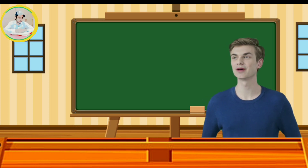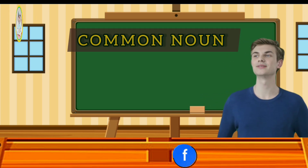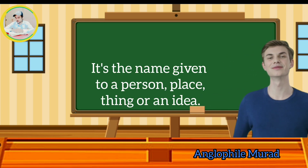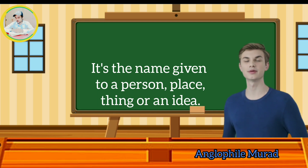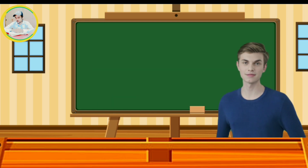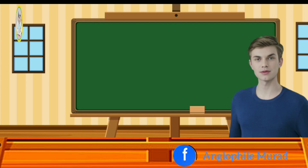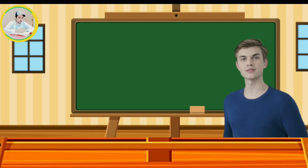Number 1: Common Noun. It is the common name given to a person, place, thing or an idea. It starts with capital letters only while appearing at the beginning of a sentence.